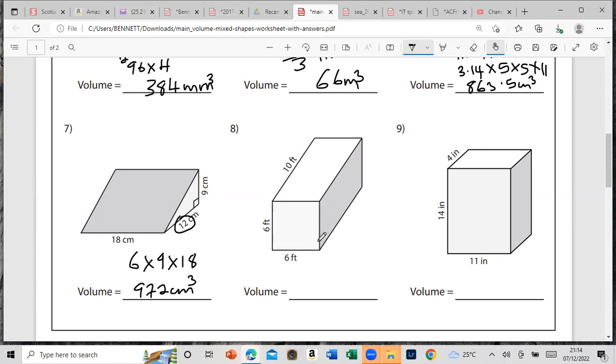For this one, this is also 10 since the opposite sides are equal. This is a square, so since these are 6 times 10, we have the base 6 times 10 is 60, then we multiply by 6, which gives us 360 cubic feet.